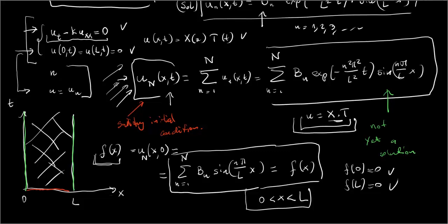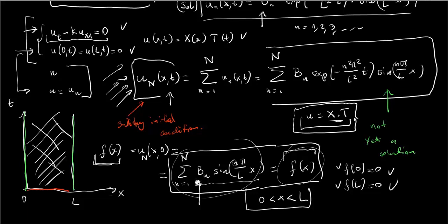Evaluating our solution at t = 0 gives u_N(x,0) = Σ_{n=1}^{N} b_n·sin(nπx/l). We want to find coefficients b_n and a number N such that this equals f(x) on the interval from 0 to l. While f(0) = 0 and f(l) = 0 as required, it is very optimistic to believe that a given function f(x) can be decomposed into a finite sum of terms b_n·sin(nπx/l).